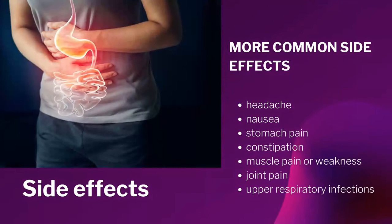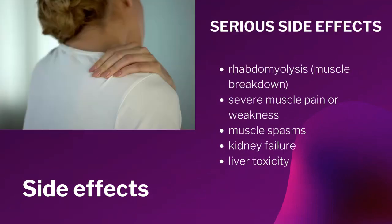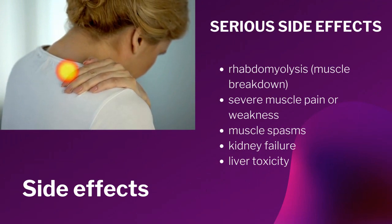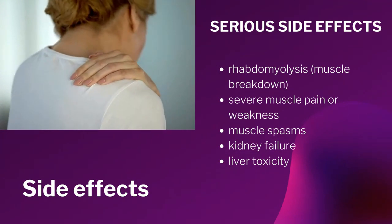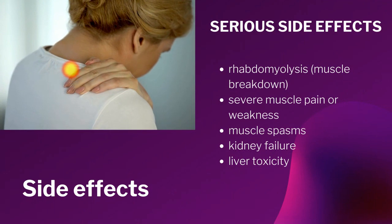In terms of the side effects of simvastatin, it is important for patients taking this medication to be aware of the most common side effects. Patients may experience headache, nausea, stomach pain, constipation, muscle pain or weakness, joint pains, and upper respiratory infections. Common side effects occurring in around 1% of cases may include indigestion and sometimes eczema. However, some patients may have serious side effects such as rhabdomyolysis, which is a muscle breakdown with severe muscle pain or weakness.